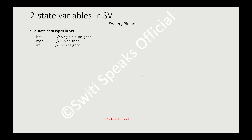Similarly, we have integer types. 'int' is a 32-bit signed variable. 'short int' is a shorter version of int — it is a 16-bit signed variable. 'long int' is a longer version of int — it is a 64-bit signed variable.